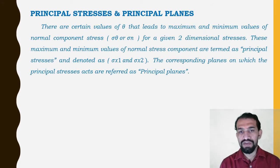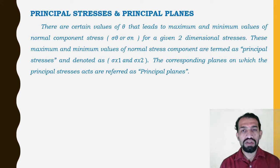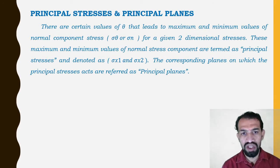There are certain values of theta that lead to maximum and minimum values of normal component stresses, sigma theta or sigma n, for a given two-dimensional stresses. These maximum and minimum values of normal stress components are termed as principal stresses.